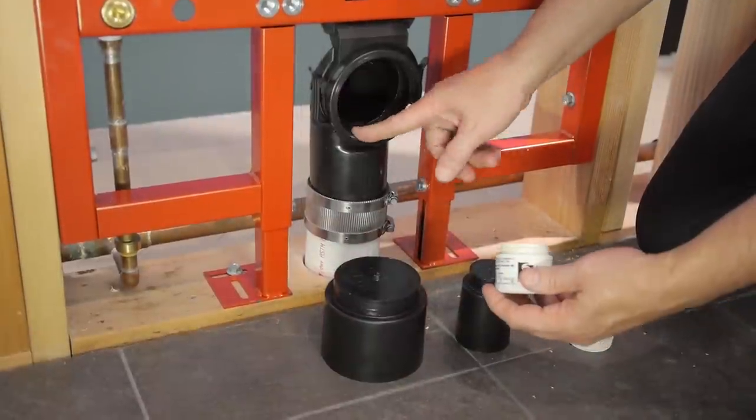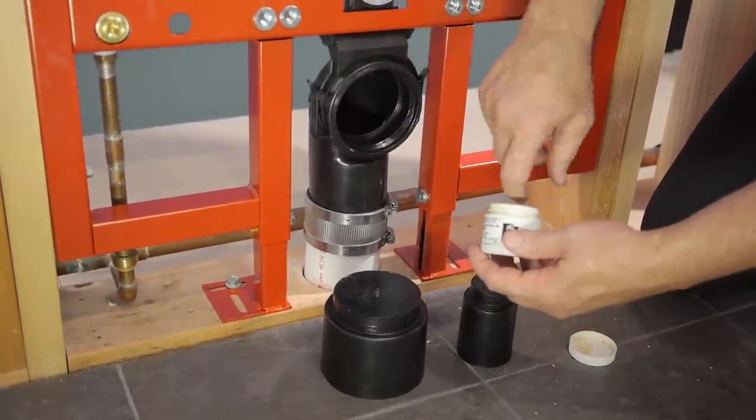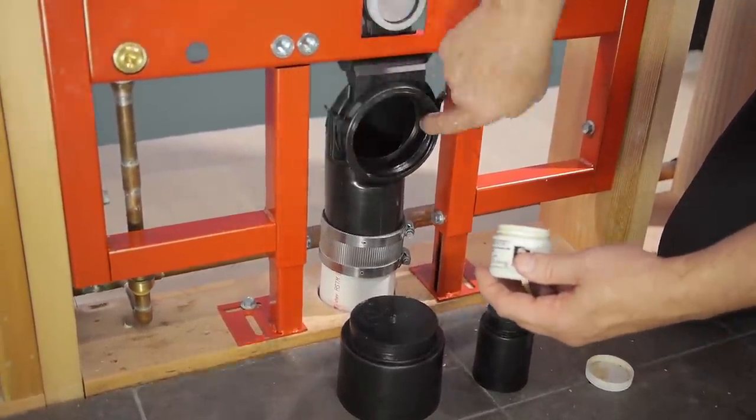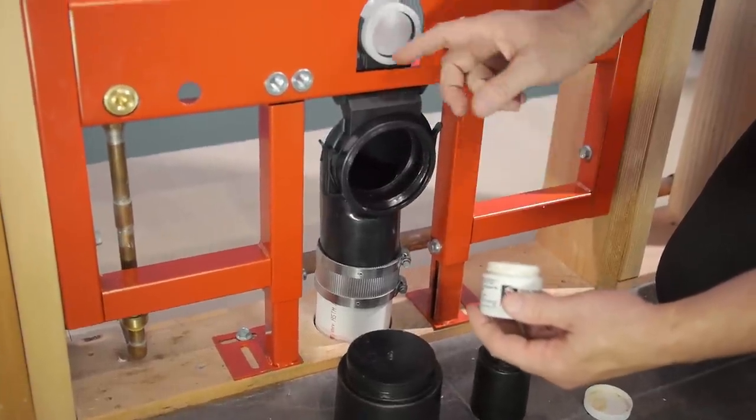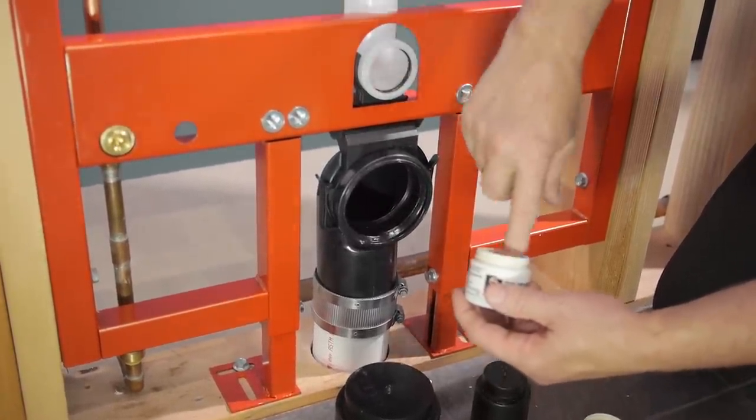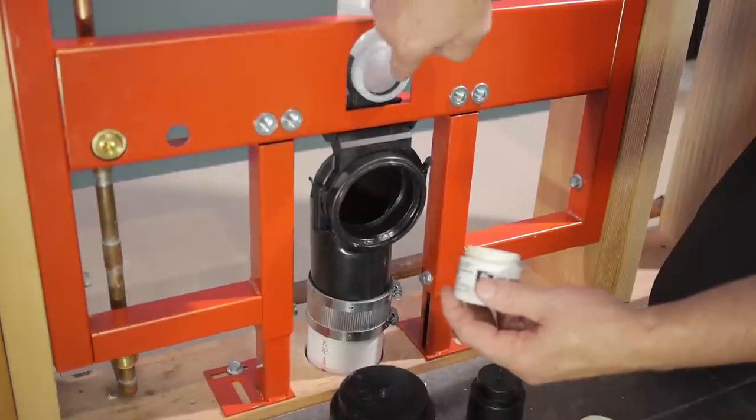To keep debris out of the in-wall system while you install the wall, insert the rough-in protectors into the open tank inlet and outlet. Use silicone plumber's grease for easy installation.